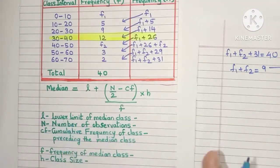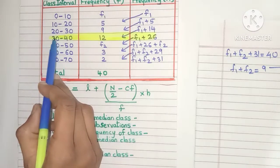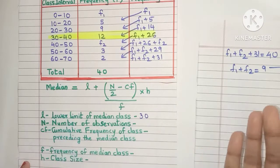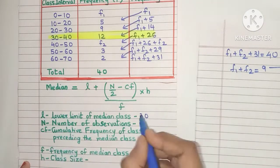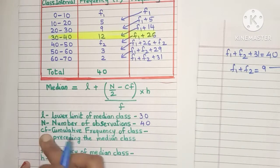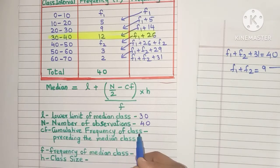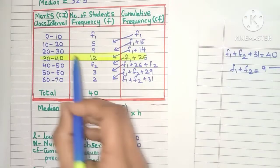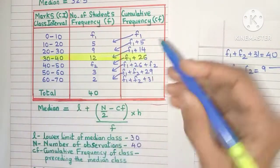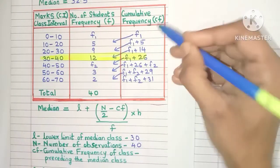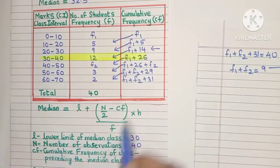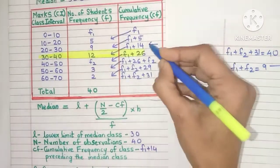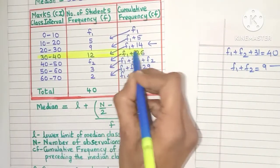Now that we know the median class, we can find all the required values. l is the lower limit of the median class, which is 30. n is the number of observations, already given as 40. cf is the cumulative frequency of the class preceding the median class — preceding means coming before. The class before the median class has a cf value of f1 plus 14.